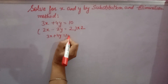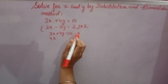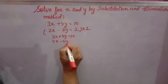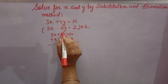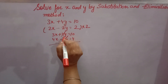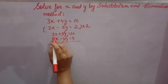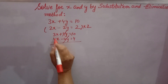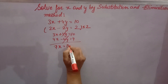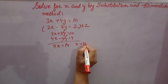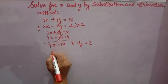Write the first equation as it is. Then 2 times the second equation gives 4x minus 4y is equal to 4. Now you can add them because the coefficient of y is the same with opposite signs. Adding: 3 plus 4 gives 7, so 7x is equal to 10 plus 4, which is 14.